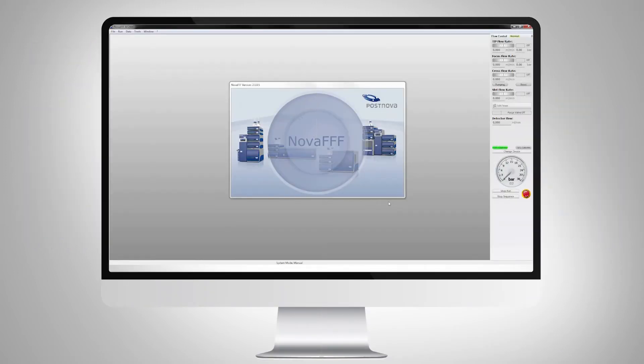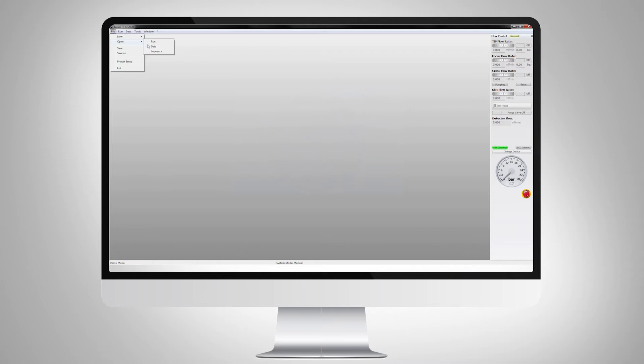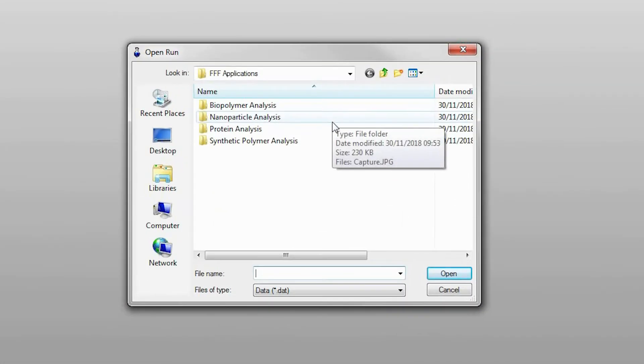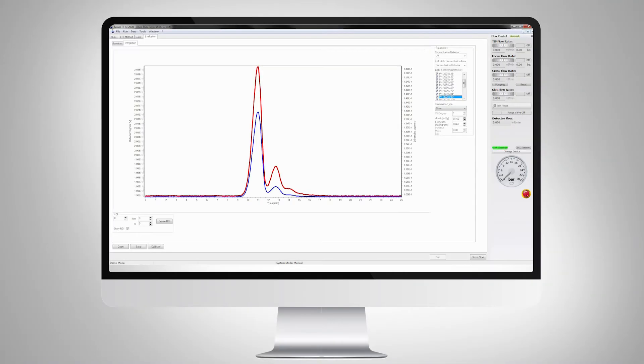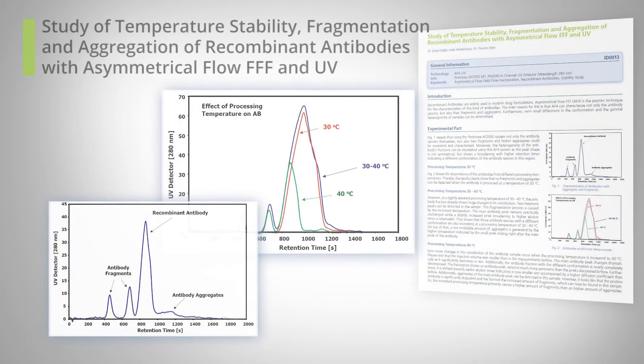The AF2000 has a very wide application range and the flexible software allows full analysis of even the most complex samples. For proteins and peptides, the separation capability allows both oligomeric state and aggregates to be quantified.